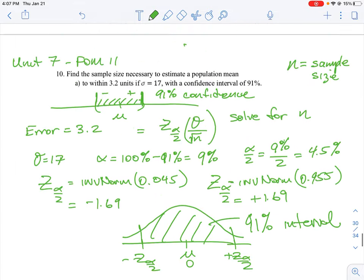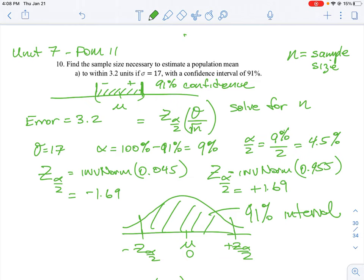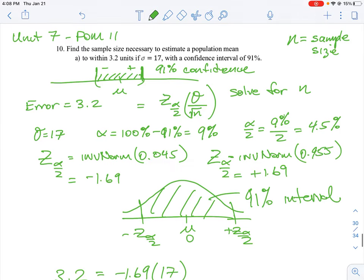That's how you do a question like this where they give you the error in units centered around the population mean and we want a confidence interval at a certain level. The other questions in this segment work the same way; you're just changing some of the numbers.